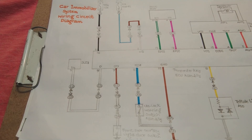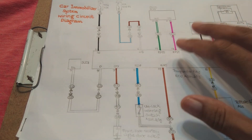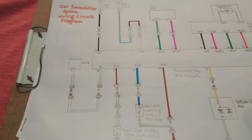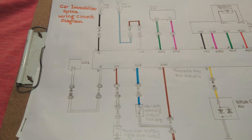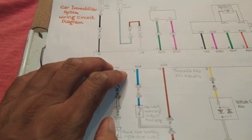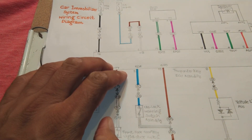In this video we will be talking about car immobilizer system wiring diagram. I will explain the whole wiring diagram. This topic is a little bit difficult but I will try to give you a full understanding of this system because it is important. This is an anti-theft system in which the car is protected from thieves, and if any thief is trying to steal the car, this system prevents that.